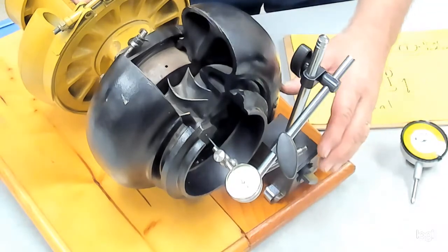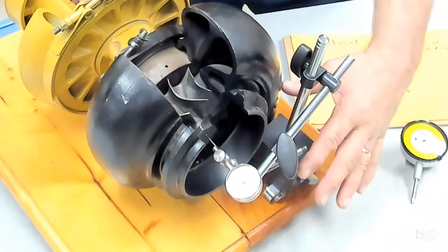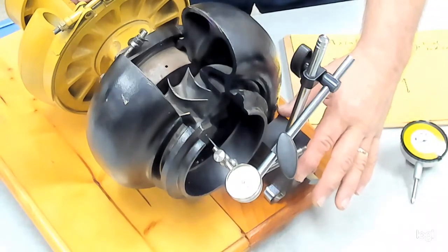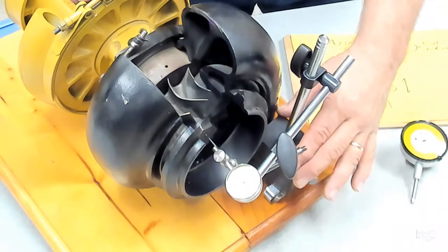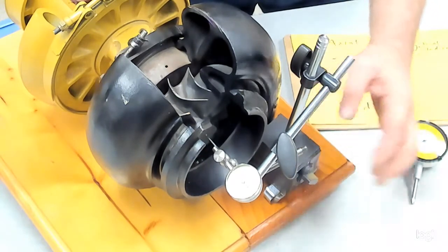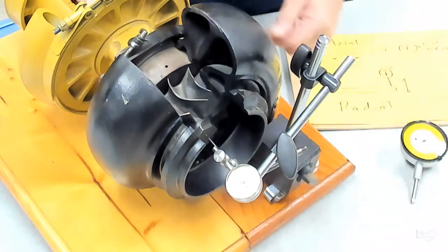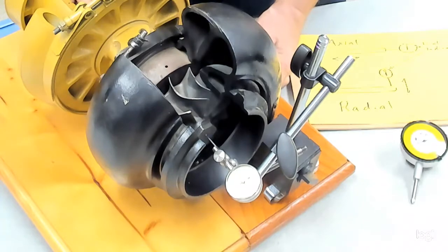The magnetic base for the dial indicator needs to be mounted or attached firmly on a flat surface. You'll see I have it propped up here a little bit so that it's solid. It does not flex or move because that will affect the reading that we get on the dial indicator.